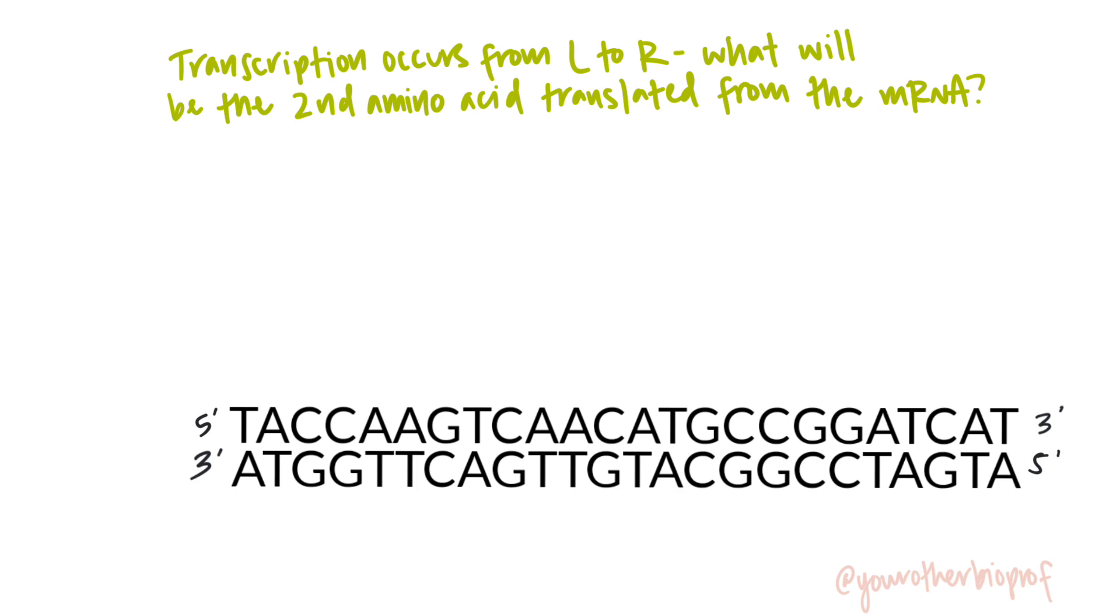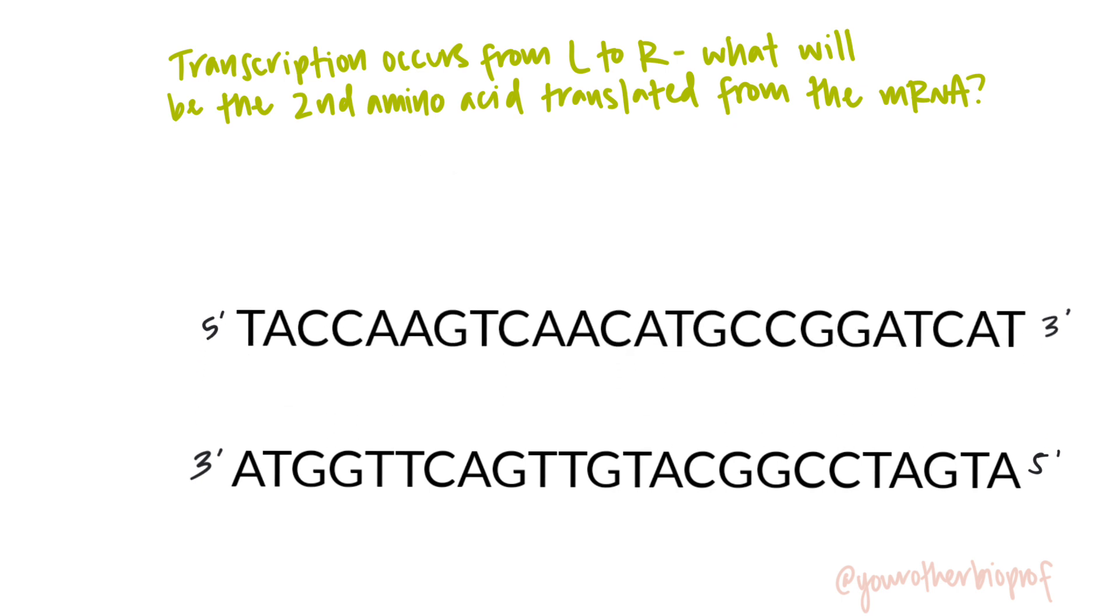Transcription occurs from left to right. What will be the second amino acid translated from the mRNA? All right, well if you're looking at our starting material down here, hopefully you are immediately noticing that this does not look like RNA. This is DNA. So we're going to have to figure out how do we get from DNA to a place where we can start figuring out amino acids.